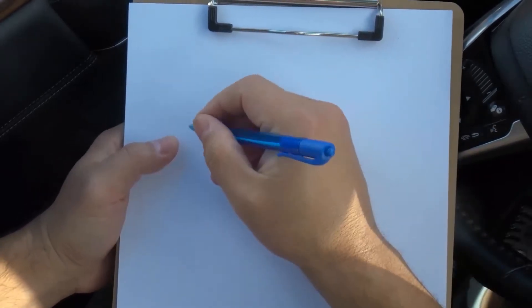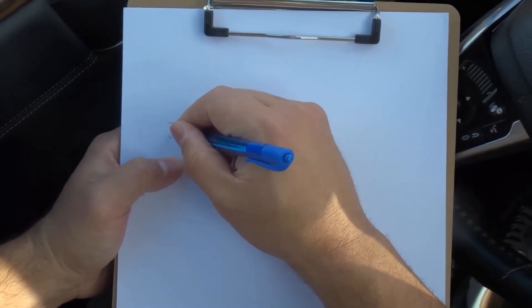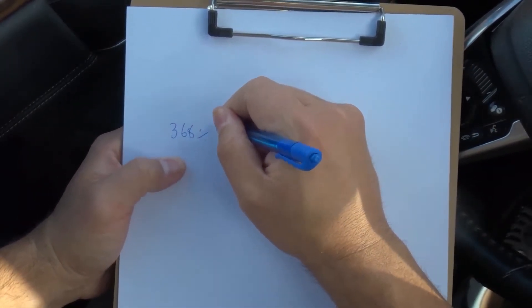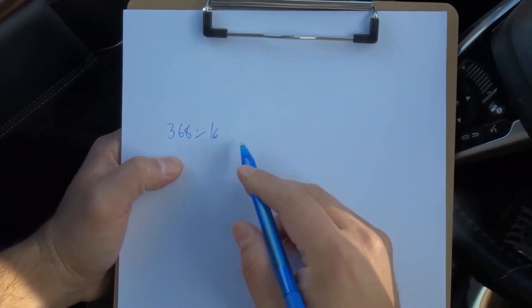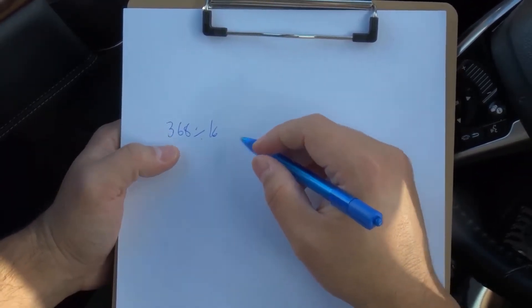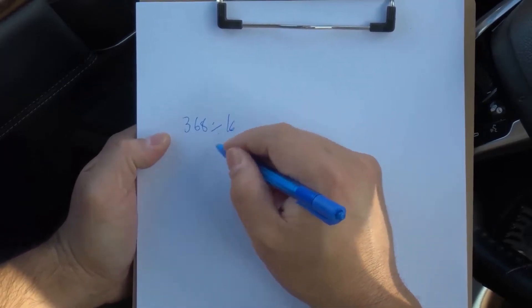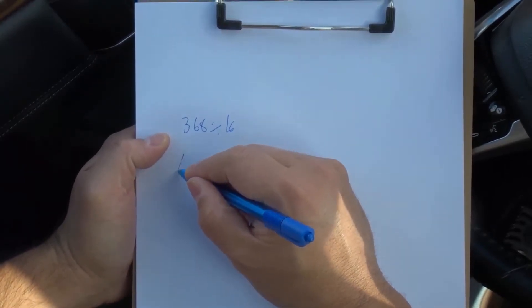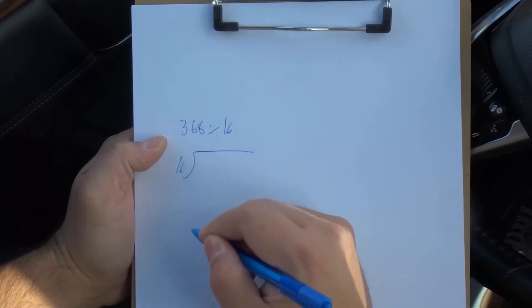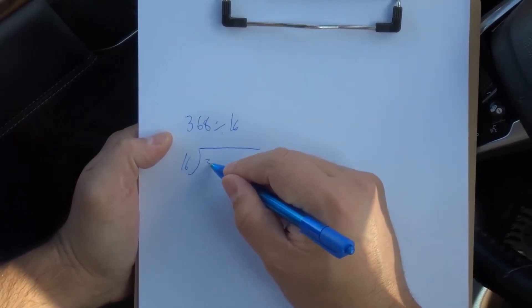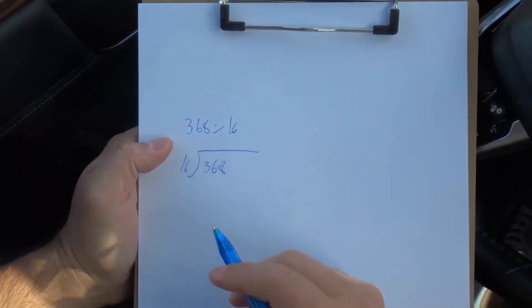So first and foremost, we're going to write down the equation. Let's say I wanted to do 368 divided by 16. So I'm going to write it down in the long division format. I'm going to put the smaller number on the outside which would be 16. I'm going to draw this symbol right here. Then I'm going to do 368. Very simple.